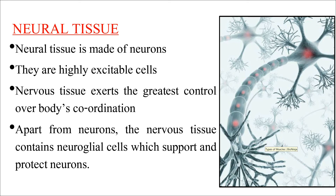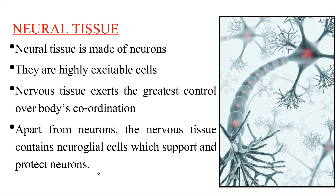Neural tissue is made up of neurons, which are highly excitable cells. Nervous tissue helps to control body action and plays an important role in overall coordination. When a neuron is suitably stimulated, an electrical disturbance is generated that travels along the plasma membrane to the neuron endings, triggering stimulation or inhibition in adjacent neurons and other cells. The nervous tissue also contains neuroglial cells, which support and protect neurons.